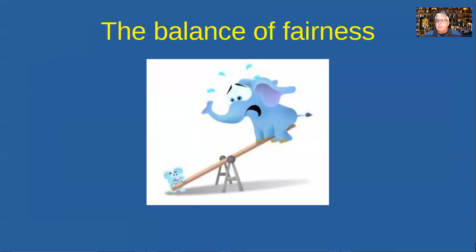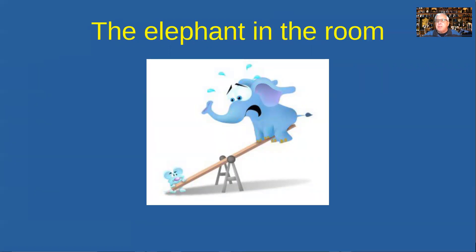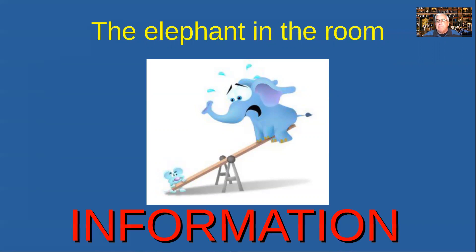It's not always easy being fair. Sometimes the big clumsy elephant who made the mistake caused trouble for the poor little mouse who suffered — and you have to allow that mouse to get the benefits of fair balance. The elephant in the room is information: too little, such as when a bid hasn't been alerted or announced, or too much, when partners have revealed what their bid meant and helped each other out of a hole.